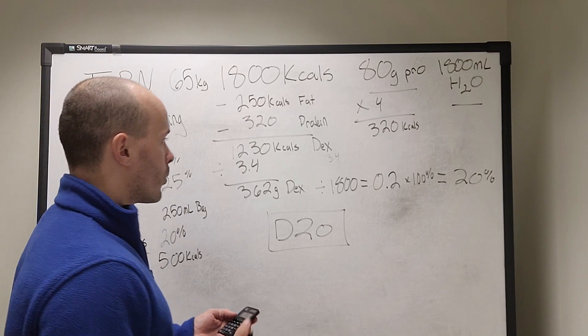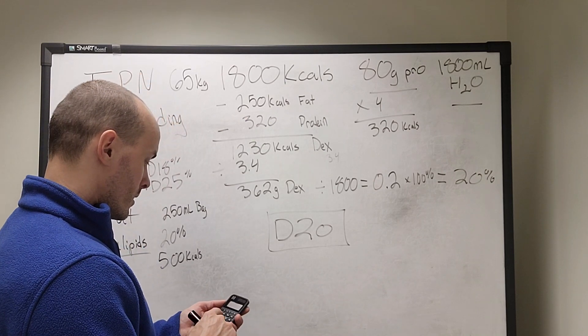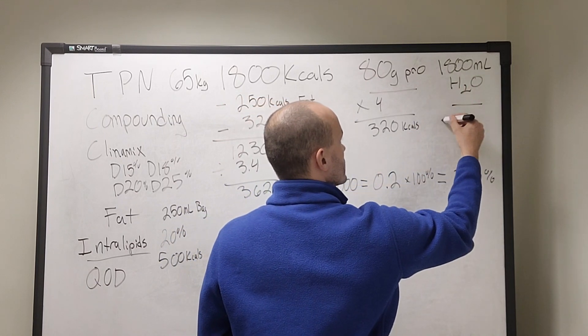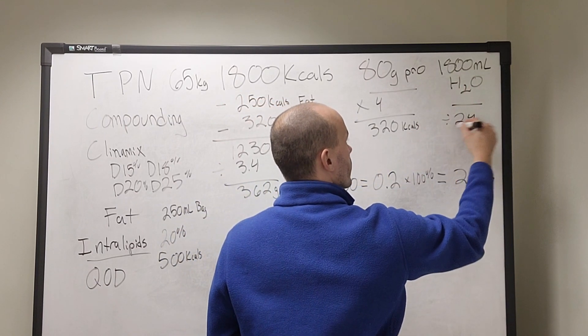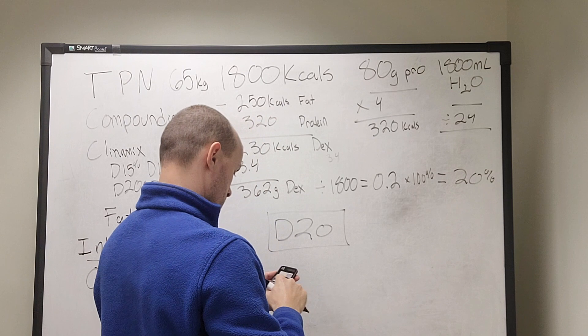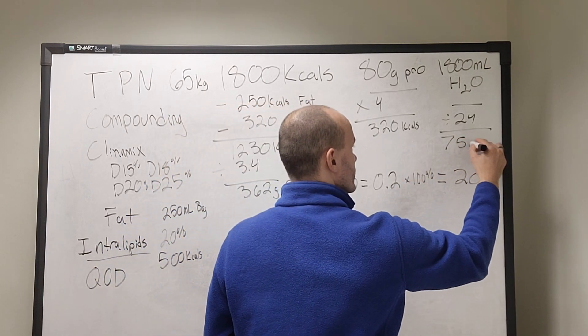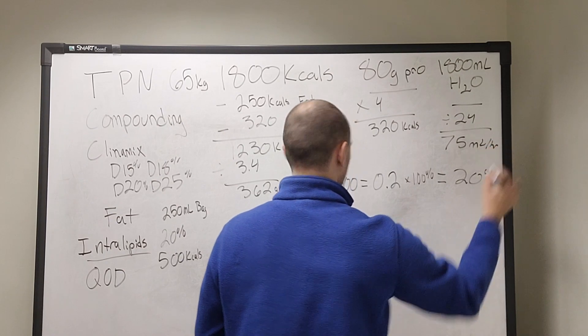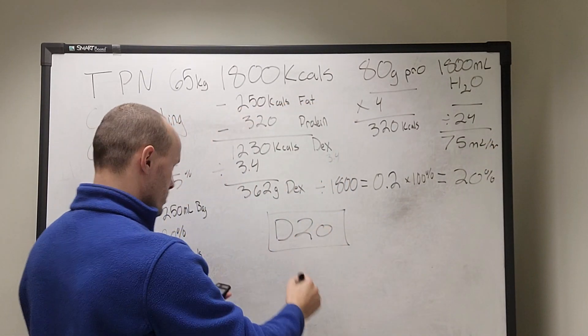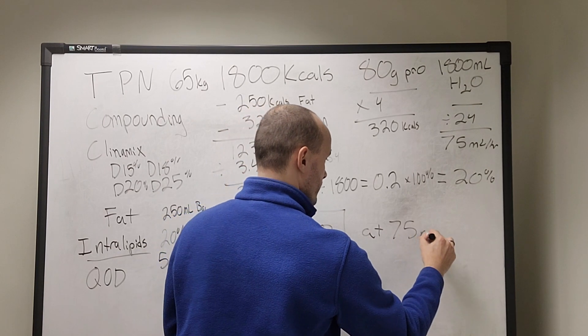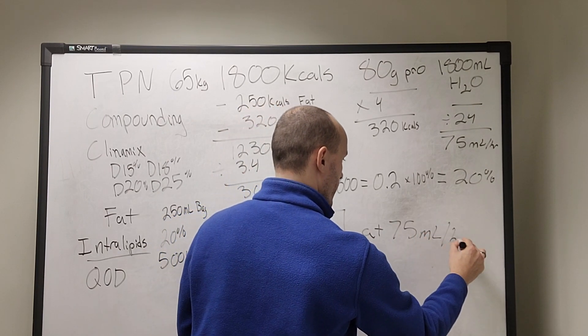The question is, what rate are we going to run that at? So we can do this: 1,800 mils divided by 24 gives you 75 mils per hour.